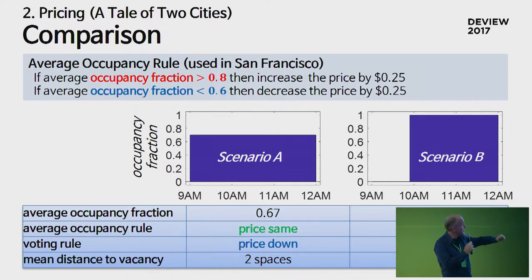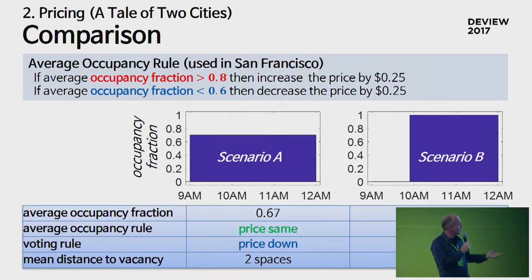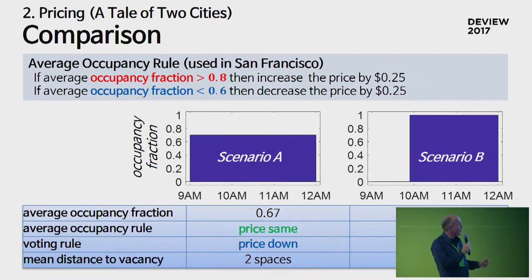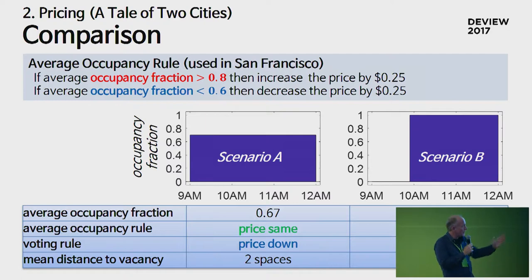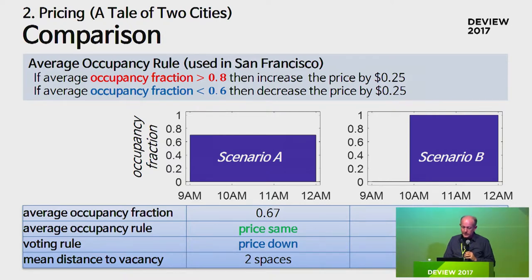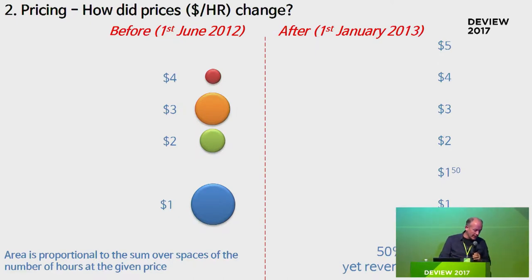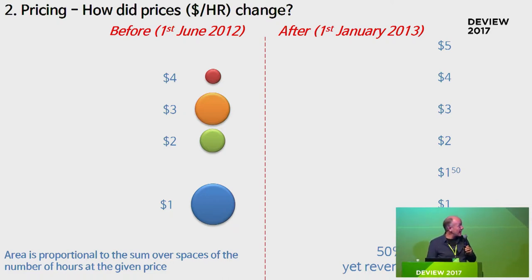It's perfectly possible to have a street where nothing much is happening - people aren't coming and people aren't going - so the occupancy fraction is constant at about two-thirds. And in another situation, it could be completely empty for the first hour of the morning and then suddenly the occupancy shoots up. Both have an average occupancy of two-thirds, so the San Francisco average occupancy rule would predict the same price. Whereas our rule would find that scenario A deserves a price decrease, because the average distance to a space is only two, whereas in the second scenario the average number of spaces you have to get past to find a vacancy is actually 11. So even quite simple rules can lead to very different conclusions. We deployed this in LA in 2012 - does it actually work?